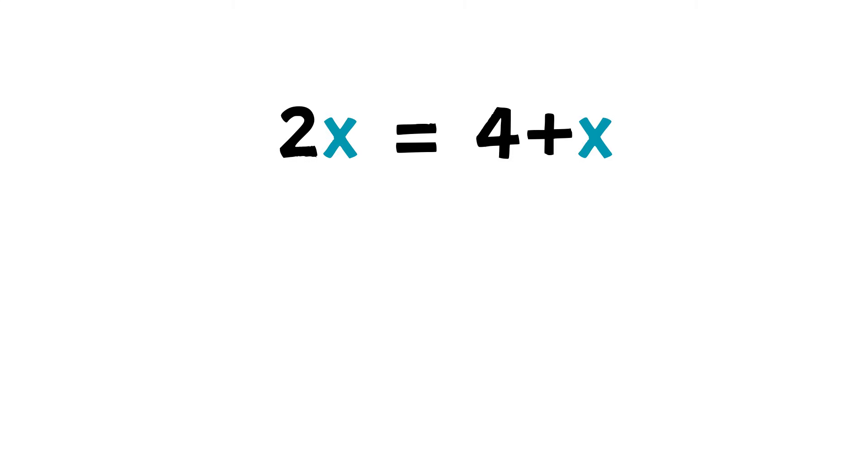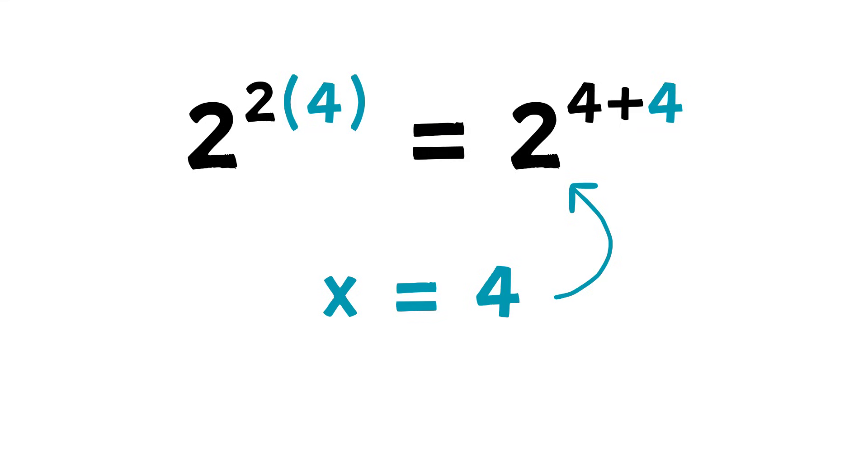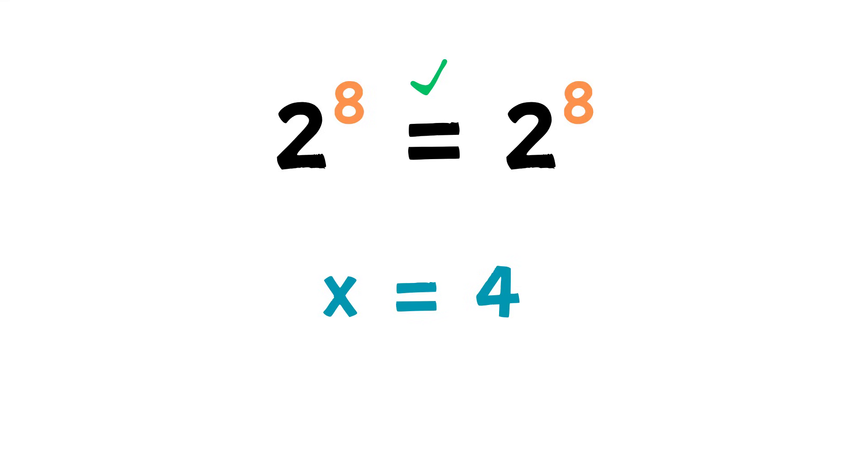And now, it's easy to solve. Just subtract x from both sides, and boom, x equals 4. And we can check our work. If we put in 4, we get 2 to the power of 2 times 4 equals 2 to the power of 4 plus 4, both of which equal 2 to the power of 8. So we found the right answer.